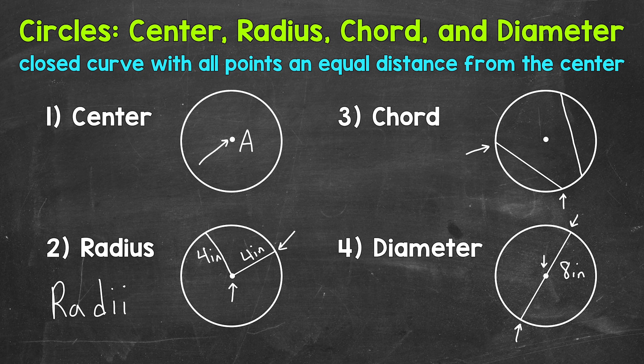And one last thing I do want to mention about diameters is that it does not matter what direction a diameter is going as long as it connects two points on the circle and goes through the center. So there you have it. There is an overview of four very important parts of a circle: center, radius, chord, and diameter.